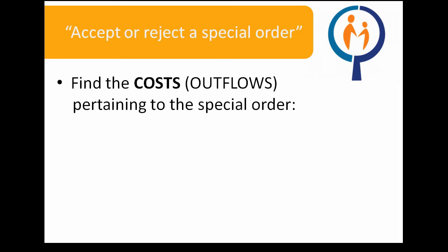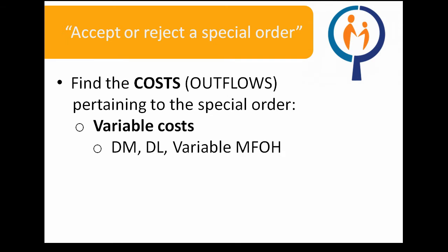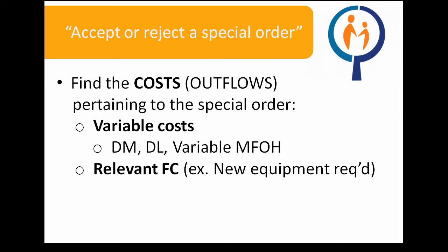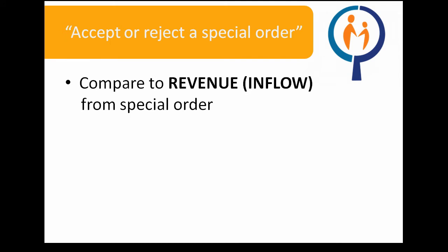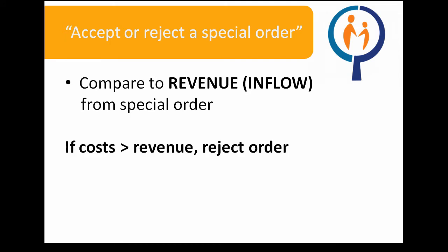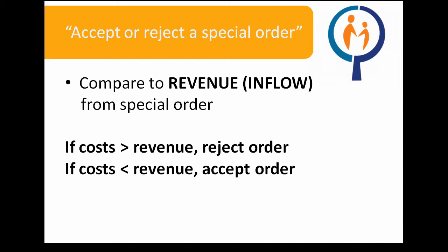The first question type we will be exploring today is the accept or reject a special order scenario. In this scenario, we want to compare the costs pertaining to the special order to the revenue pertaining to the special order. Costs include variable costs such as direct materials, direct labor, and variable manufacturing overhead; relevant fixed costs such as new equipment or a new salaried inspector; and any relevant opportunity costs such as lost sales from reassigning part of your capacity. This needs to be compared to the revenue obtained from the special order. If the costs exceed the revenue, the special order should be rejected. If the costs do not exceed the revenue, the special order should be accepted.